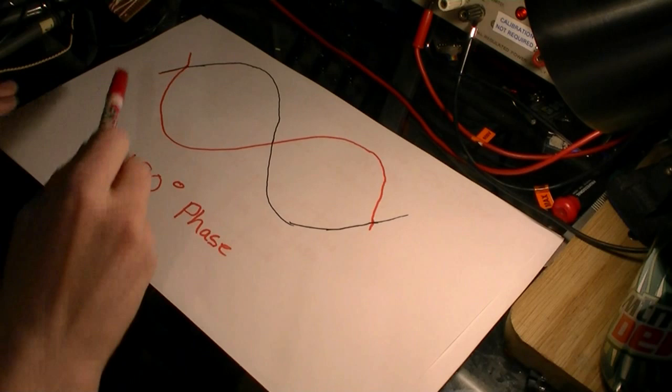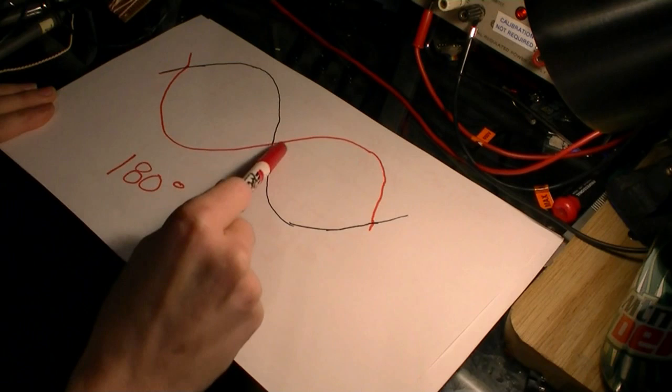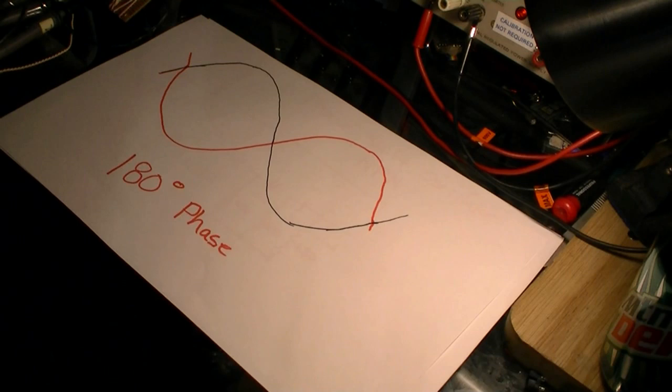Waves are considered phase shifted or out of phase when they do not superimpose on top of each other. For instance, this represents 180 degrees out of phase when one wave is crossing at zero, the other is crossing at 180 degrees.